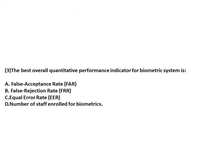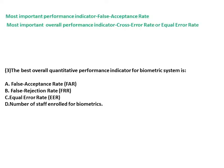The best overall quantitative performance indicator for a biometric system — when the most important performance indicator is asked, the answer is False Acceptance Rate. But when the most important overall performance is asked, the answer should be Cross Error Rate or Equal Error Rate.